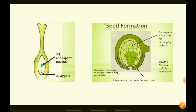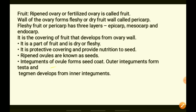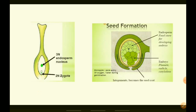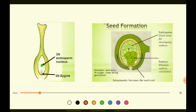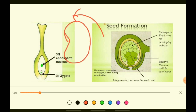After fertilization, the ovary will enlarge and it will become a fruit.